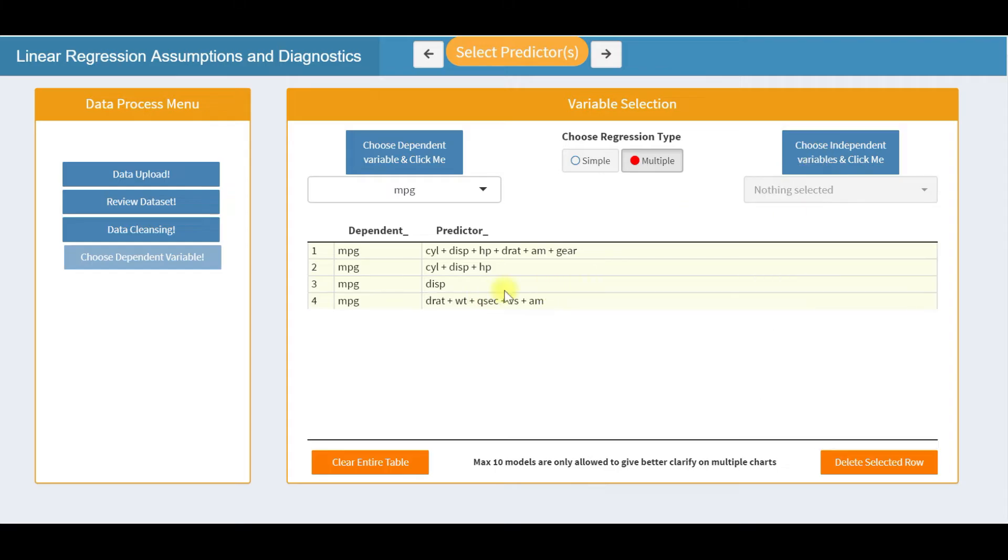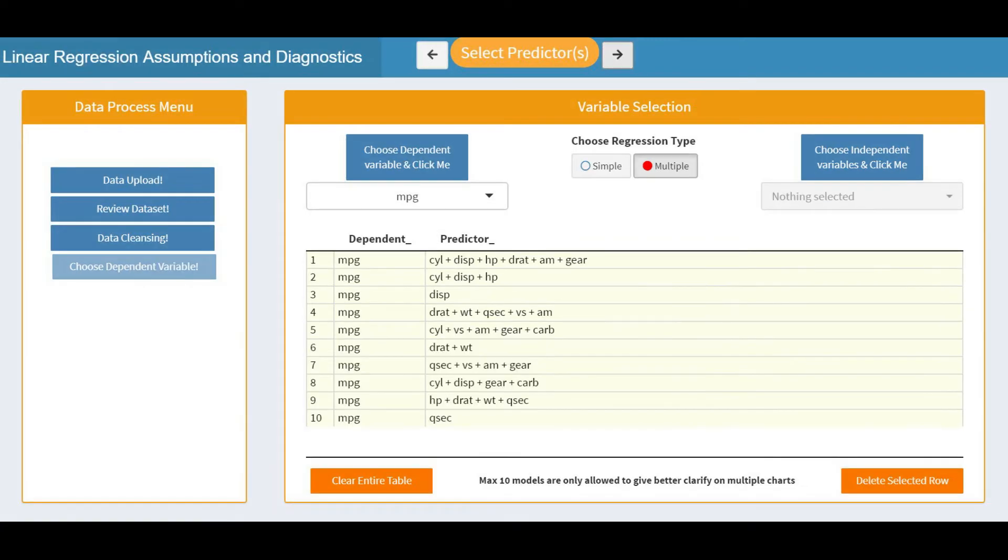You can see those amber buttons on the bottom right and left side of the screen. We'll see those charts shortly. Something special here, you have the option to mix both types of models. Now we have 10 models ready for the test of assumptions of linear regression.